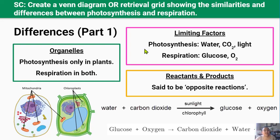Photosynthesis and cellular respiration also have five major differences. Difference one — organelles: chloroplasts are found in plant cells only, so animal cells cannot photosynthesize, whereas mitochondria are found in both plant and animal cells, so both plants and animals can carry out aerobic respiration. Difference two — limiting factors: the reactants and products of each process are opposite, so the concentrations of these molecules affect each process differently. For example, low carbon dioxide and water limit photosynthesis because they are reactants, but won't affect cellular respiration because they are products. Similarly, low glucose limits respiration because it's a reactant, but won't affect photosynthesis because glucose is a product.